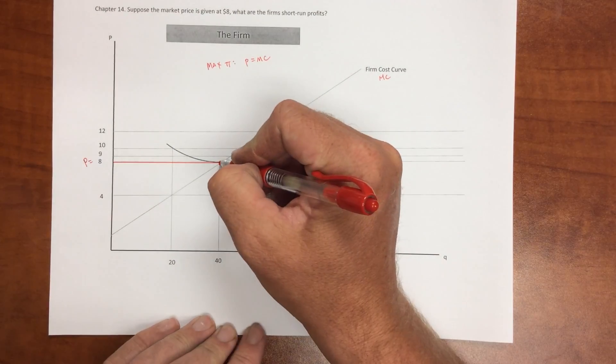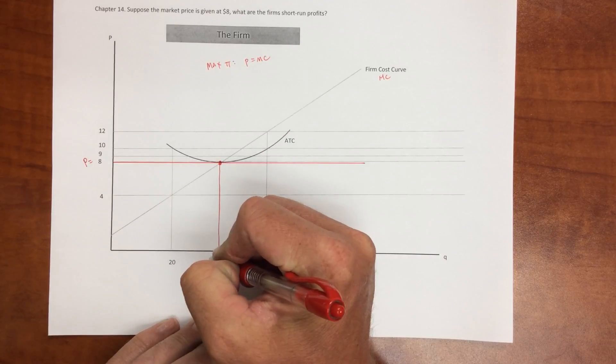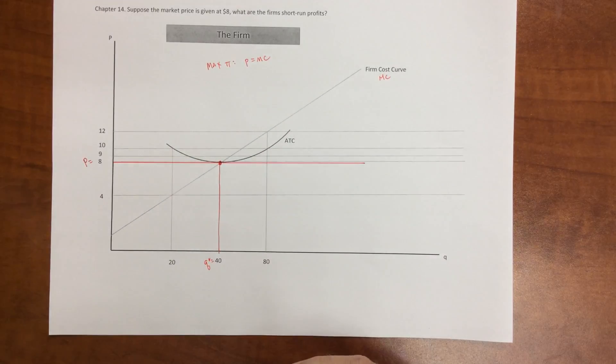So we draw that down and this now is little q star. And so that answers the question of how much the firm is going to produce. They're going to produce 40 units at the given price of $8.